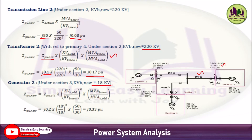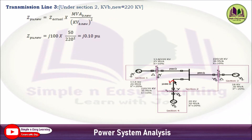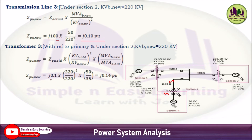For transmission line 3 (j100 ohm, section 2): Z_pu = j100 × 50/220² = j0.10 per unit. For transformer T3 (HT side in section 2, rated 35 MVA, 220/20 kV, x = 10%): Z_pu_new = j0.1 × (220/220)² × (50/35) = j0.14 per unit. You can refer to either the HT side with section 2 base kV or the LT side with section 4 base kV.